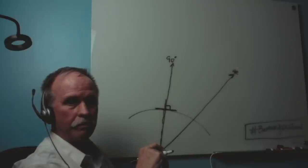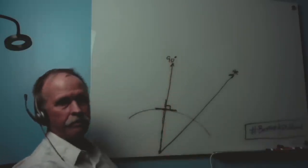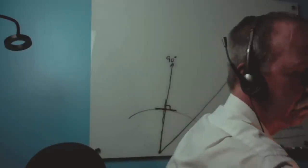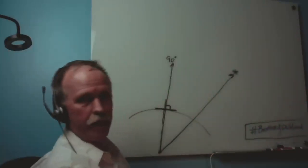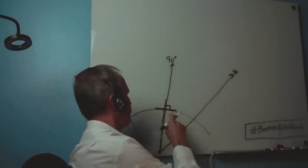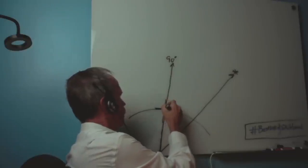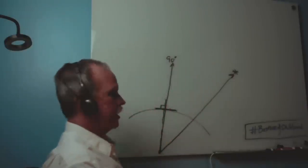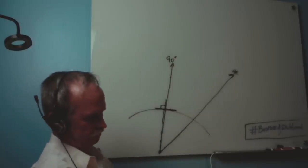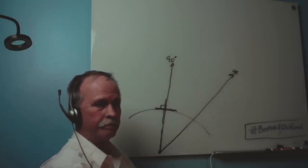Bob asks Adam to hold questions until he finishes the basic presentation. Adam says his point was that the starting diagram should show 90 degrees at 12 o'clock to avoid misrepresenting things to the audience. Bob says he's not going to realign it and to just accept the representation. There's extended back-and-forth about whether the slightly off-angle diagram misleads viewers. Bob identifies the vertex and the zenith — directly over the observer's head at 90 degrees to their location.